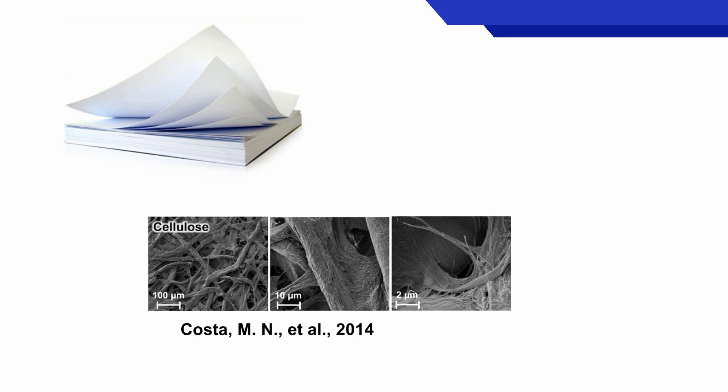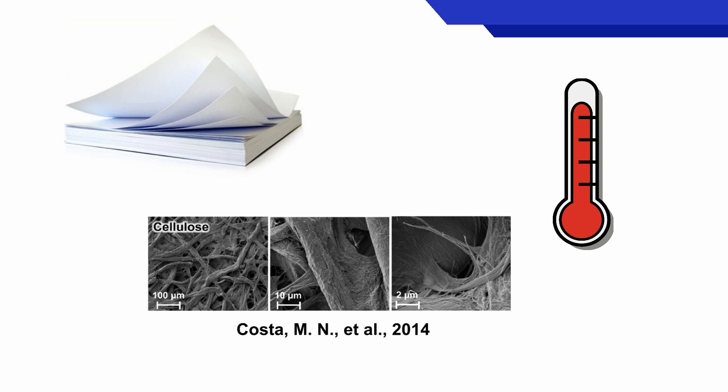Cellulose-based paper consists of fibers with tunable porosity to allow gases to permeate its bulk volume. Paper is also capable of handling temperatures up to 250 degrees Celsius.